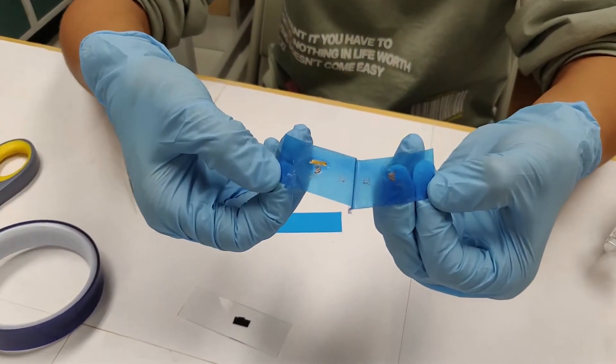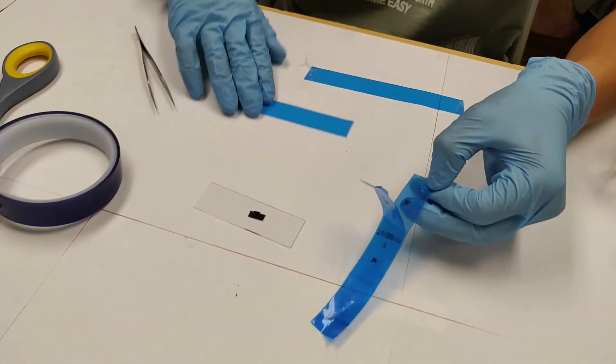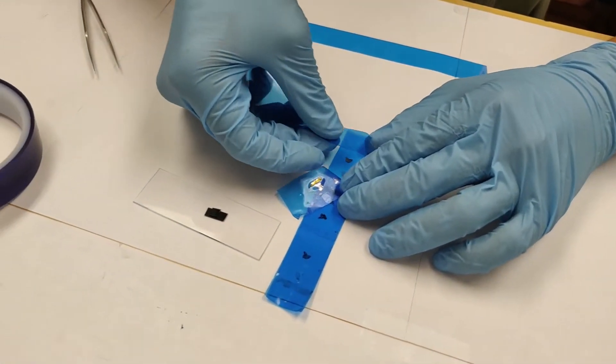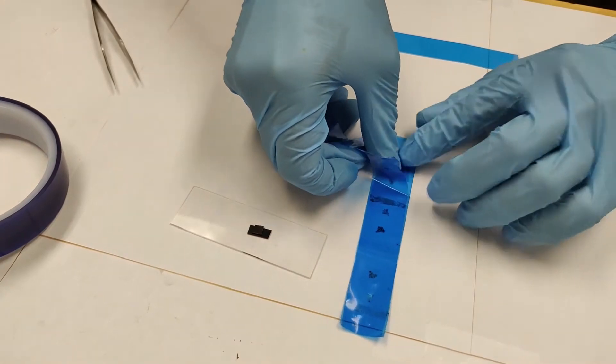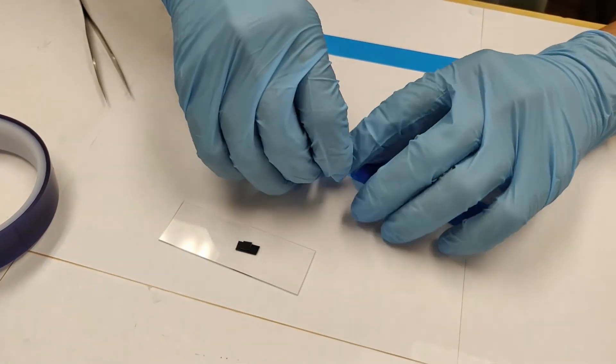So this is the bulk MOS2 right here. And what you want to do is get a piece of tape and place it over the bulk material. Then just lift it off.